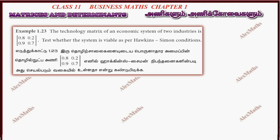Hi students, this is Alex here. Example 1.23. The technology matrix of an economic system of two industries is 0.8, 0.2, 0.9, 0.7. Test whether the system is viable as per Hawkins-Simon conditions.